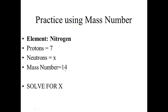Let's do some more practice with mass number. Remember that mass number is the number of protons plus the number of neutrons is the mass number. Here's an example. Nitrogen has 7 protons. We don't know the number of neutrons, but the mass number is 14. So, 14 minus 7 equals X. X is equal to 7 as well, 7 neutrons.